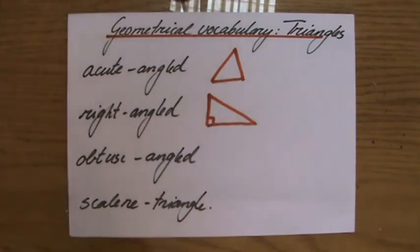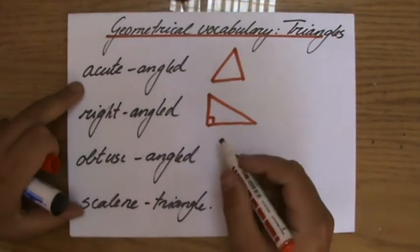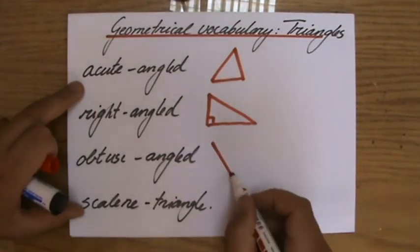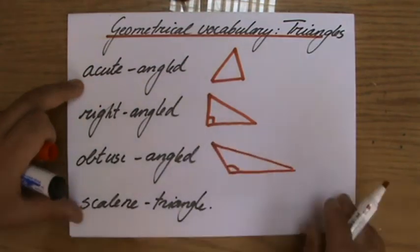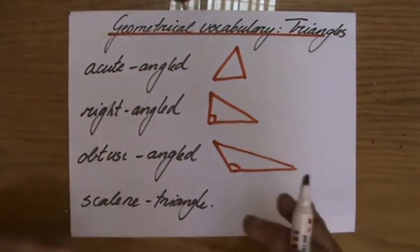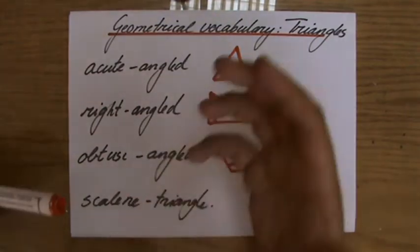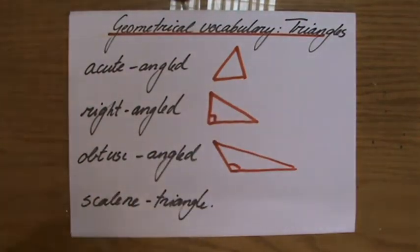But anyway, that's a right angle triangle. An obtuse angle triangle is a triangle with one angle which is obtuse, so between 90 and 180 degrees. And again, the question, could you have two obtuse angles in a triangle?